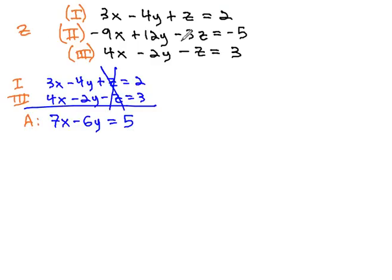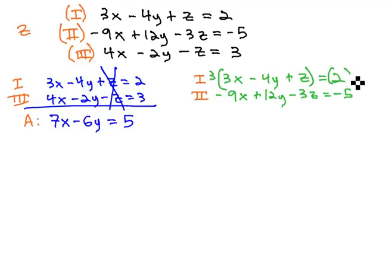To eliminate z a second time, I might use equations 1 and 2, because we already have the opposite sign. Equation 1 is 3x minus 4y plus z equals 2, equation 2, negative 9x plus 12y minus 3z equals negative 5, and to get opposites in front of z, we need to multiply the first equation by 3.